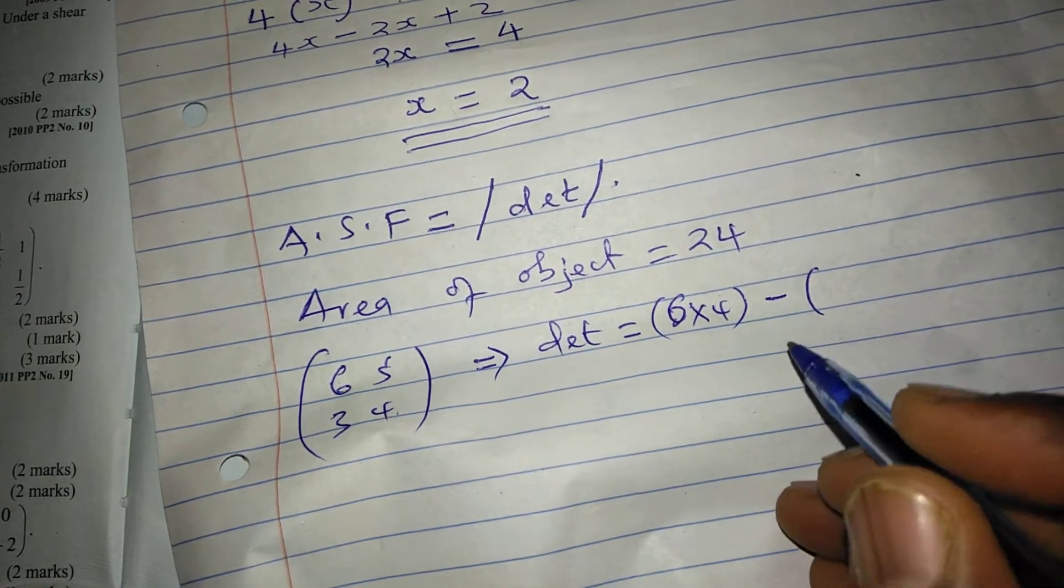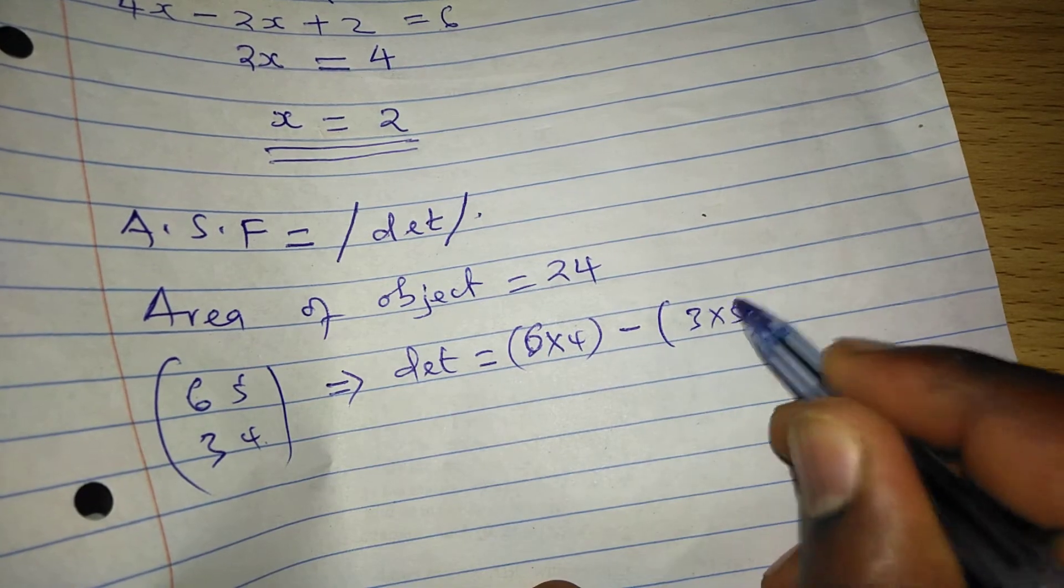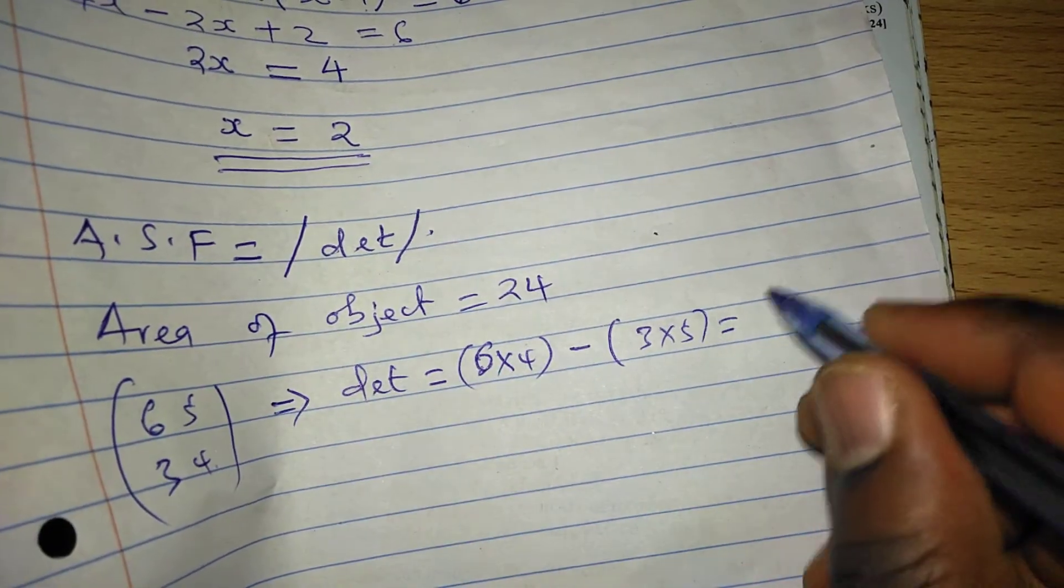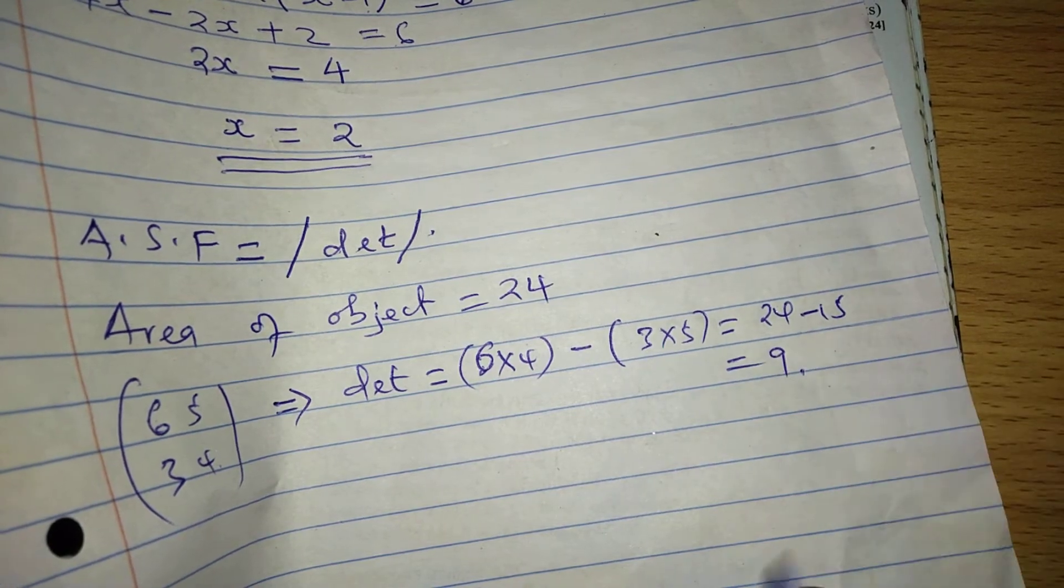Then we subtract product of elements in the other diagonal, that is 3 by 5. So this gives us 24 minus 15, and 24 minus 15 is 9.